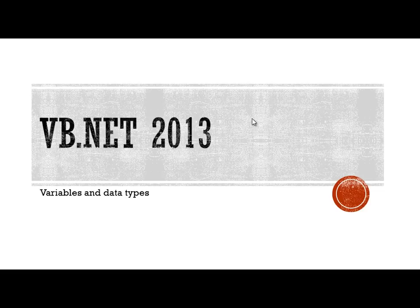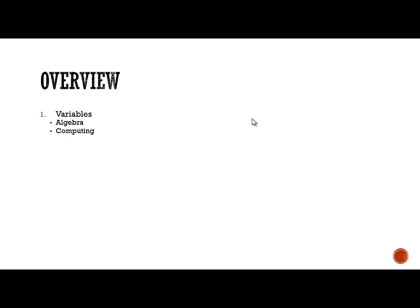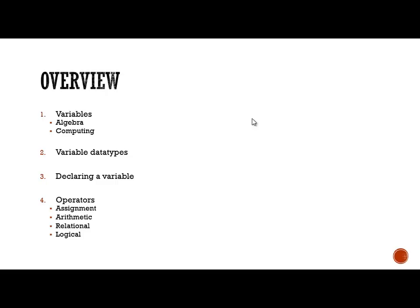I'm going to try my hardest to explain what a variable is, how you use it, things associated to it, and the different data types available to you. If you don't understand them by the end of the video, then you really need to find another resource or email me and tell me this video was crap. To give you a quick overview, we're going to look at variables in both algebra and computing.